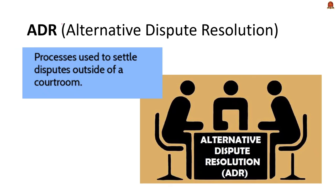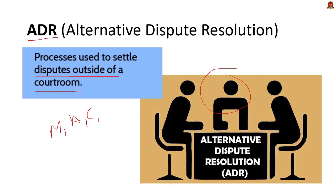Let us understand what is alternate dispute resolution. It refers to methods used to resolve disputes without going to court. It includes techniques like mediation, arbitration, conciliation and negotiation. In this process, a third neutral party will help the disputing parties to reach an agreement. ADR is faster, less formal and usually cheaper than traditional court processes, making it an effective way to settle conflicts in a more amicable and efficient manner.